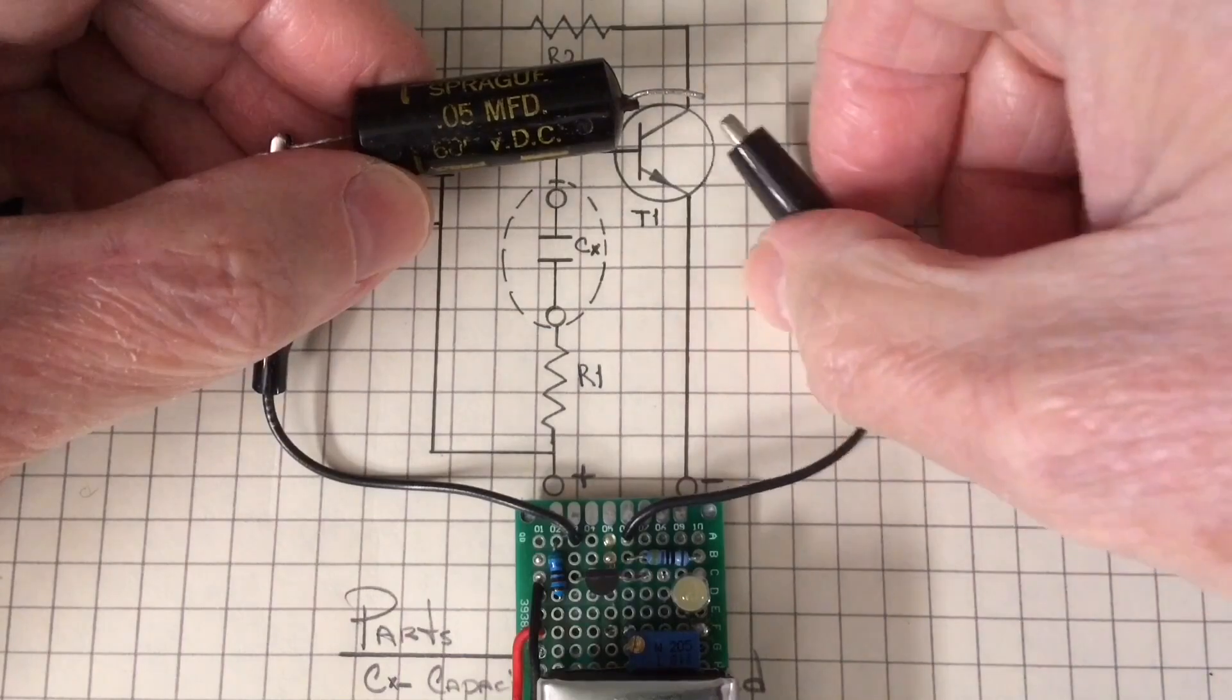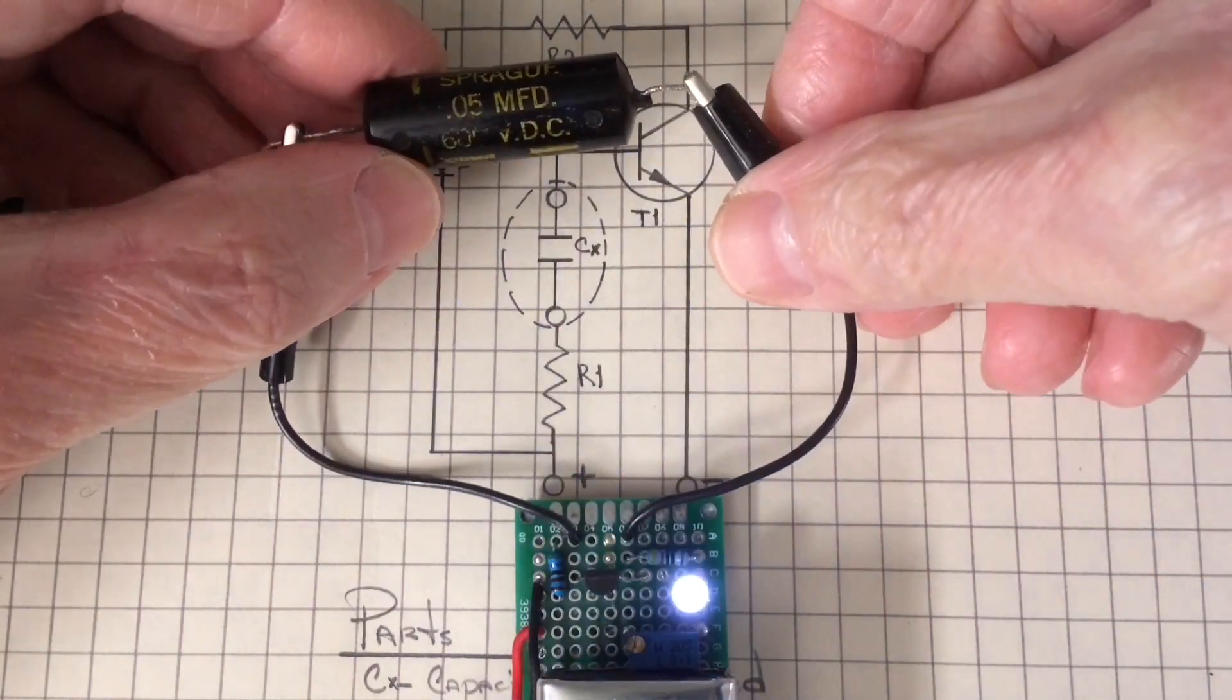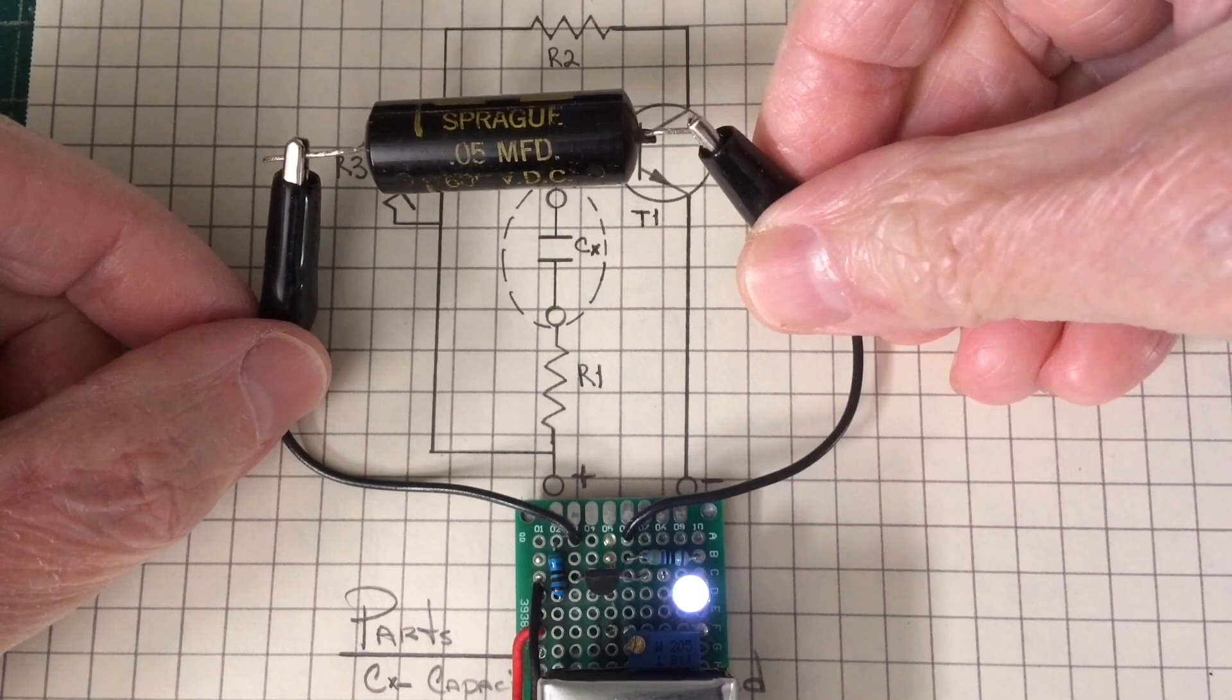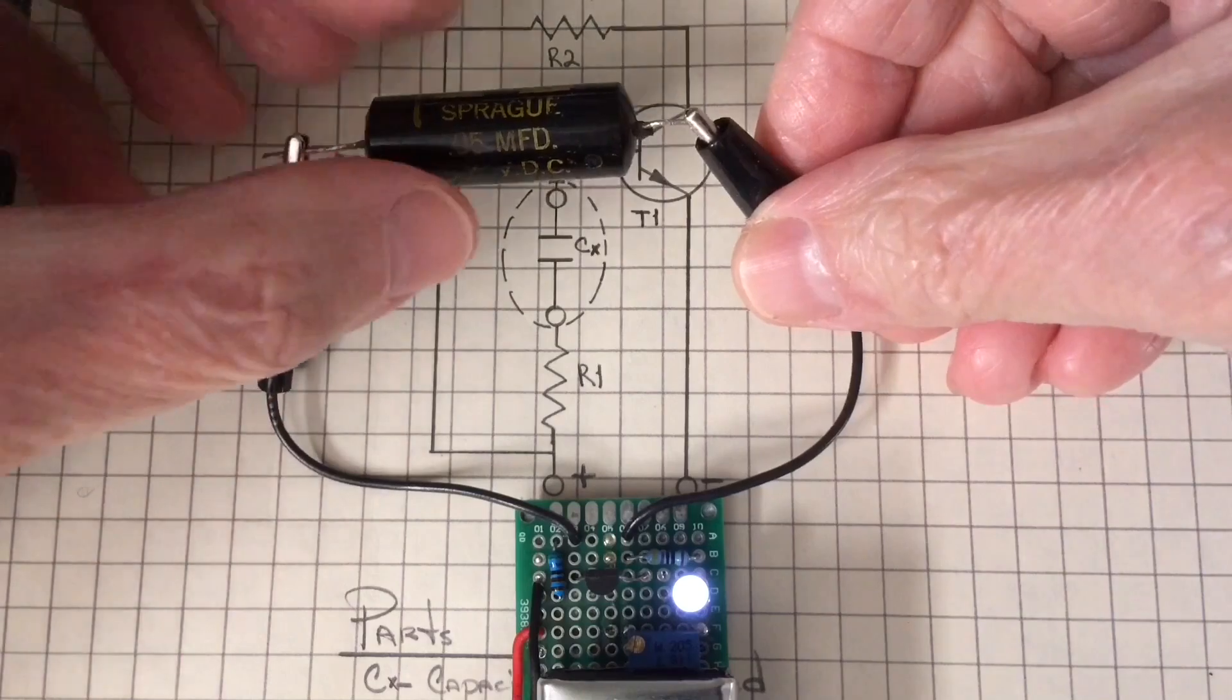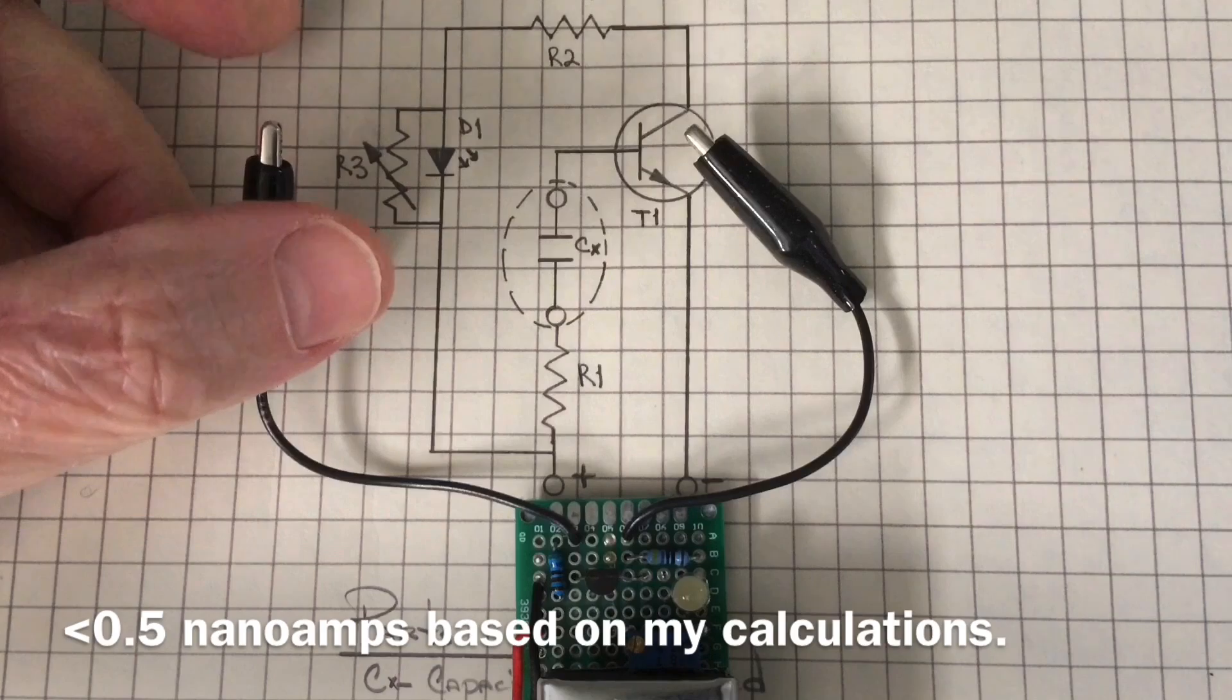But you can see the simple circuit that I've built that will allow me to test up to 2 billion ohms or just north of that, and less than 0.5 nanoamps.